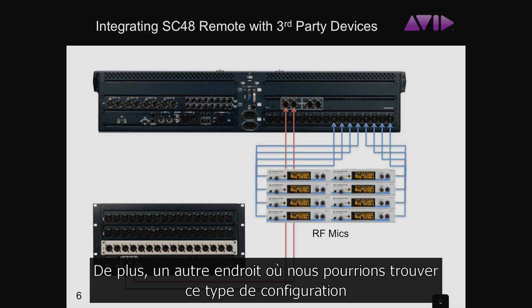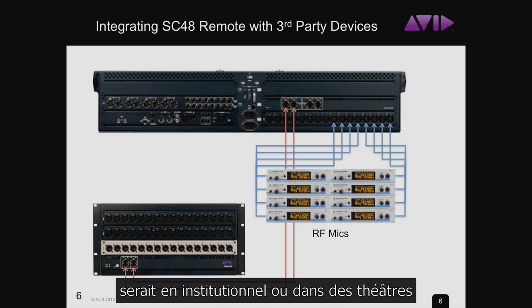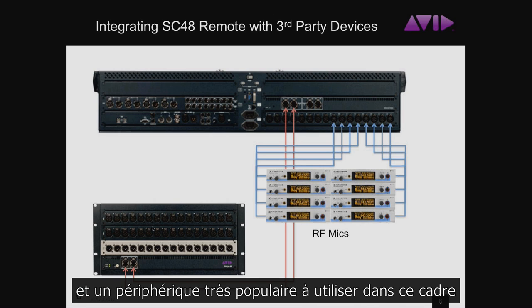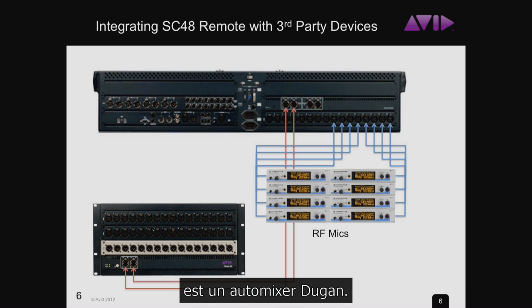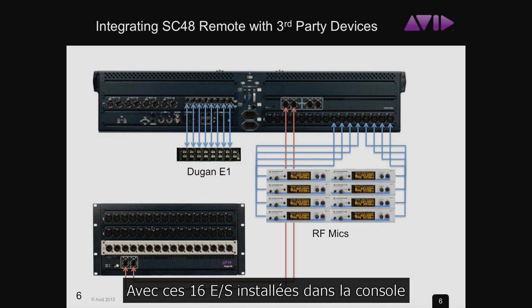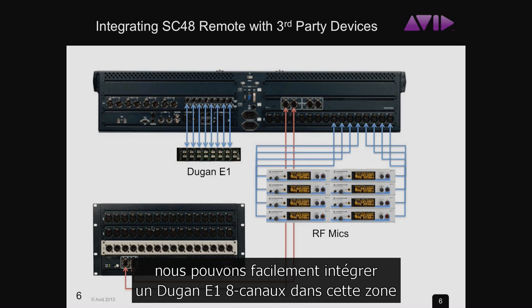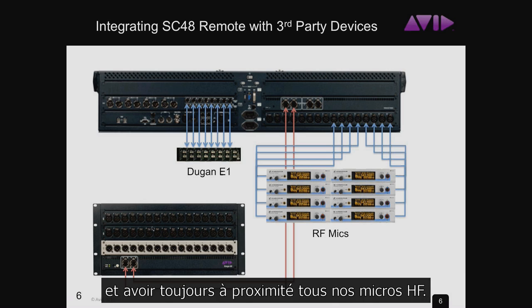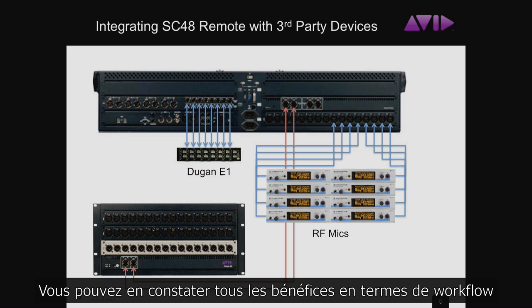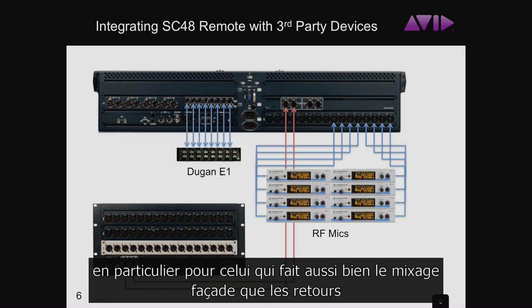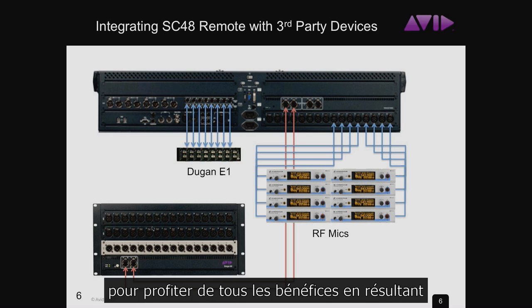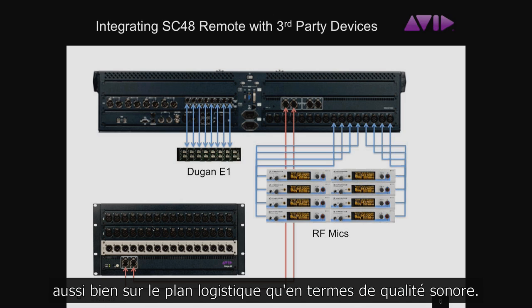Another place we see this setup is in corporate events or churches with drama. A very popular device in that setting is a Dugan auto mixer. With the IO16 installed in the console, we can easily integrate an 8-channel Dugan E1 and do the auto mixing right there, while keeping all RF mics locally. You can keep everything located at the console yet still take advantage of the remote I/O for both workflow logistics and sound quality.